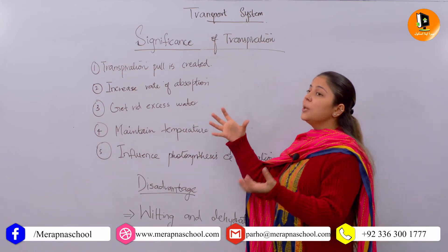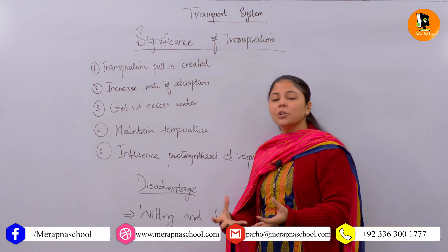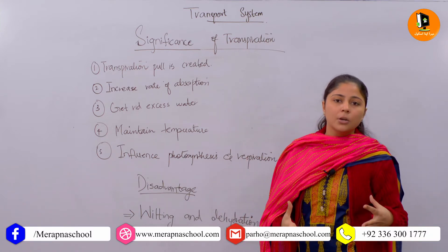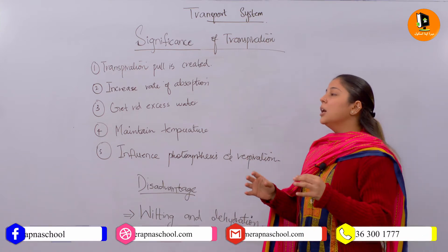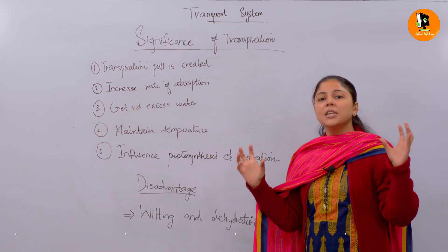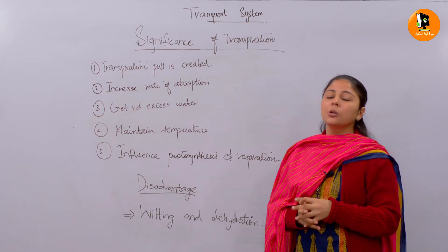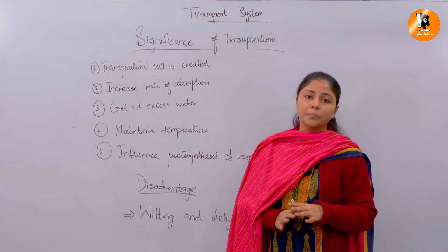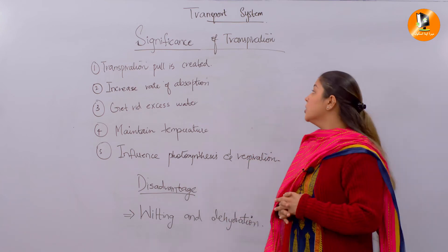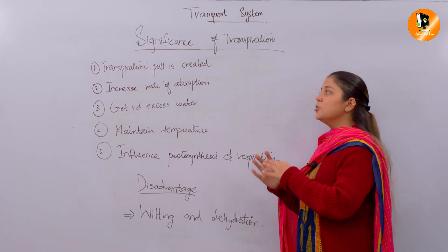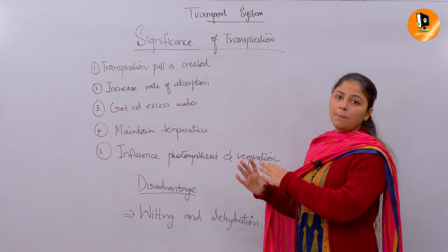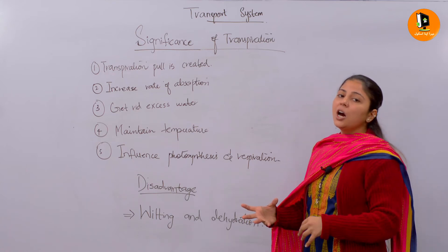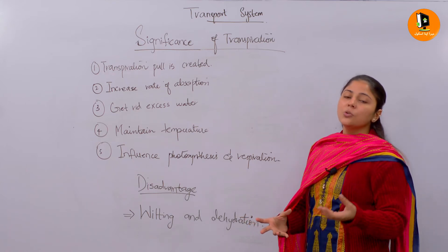This transpiration pull actually balances and influences the ascent of sap, maintaining the concentration of water molecules throughout the plant and the leaves. So the first important significance is that transpiration pull is created — a force which allows the movement and evaporation of molecules from the surface of the leaves.